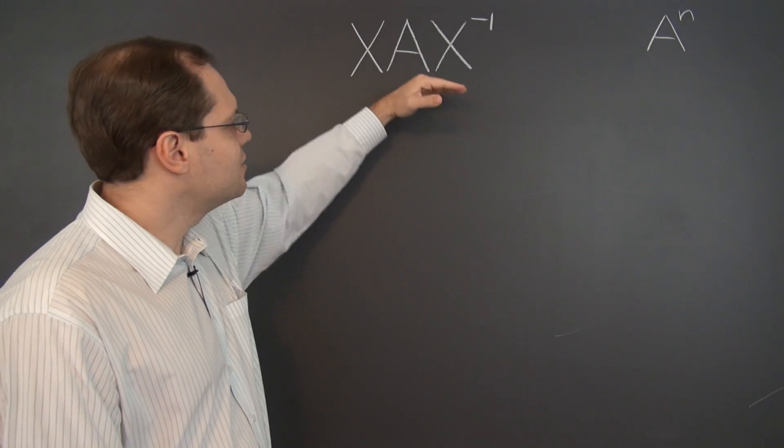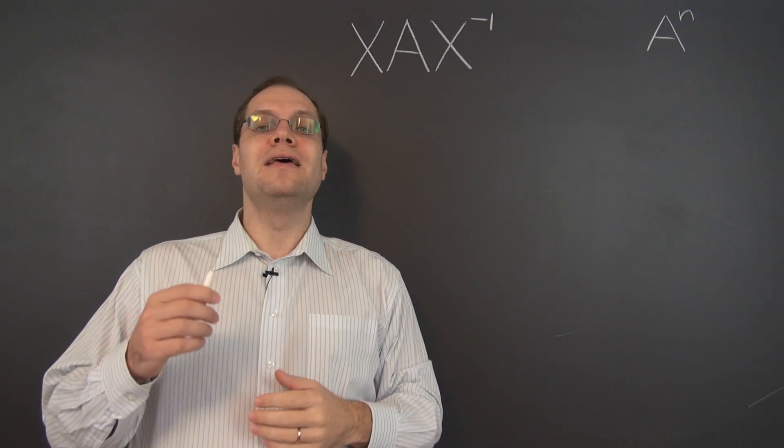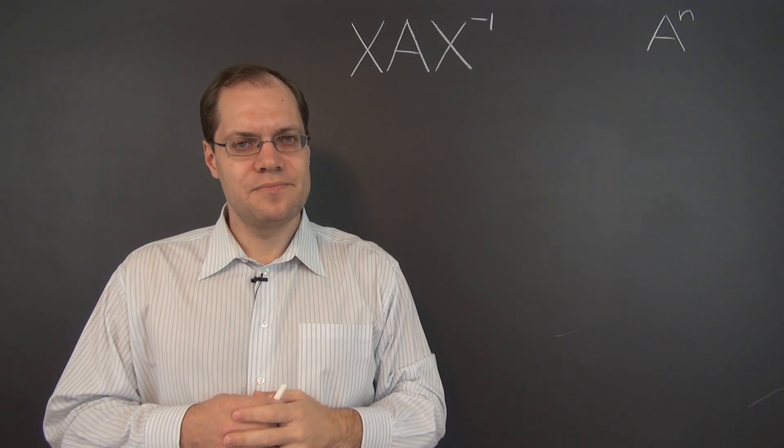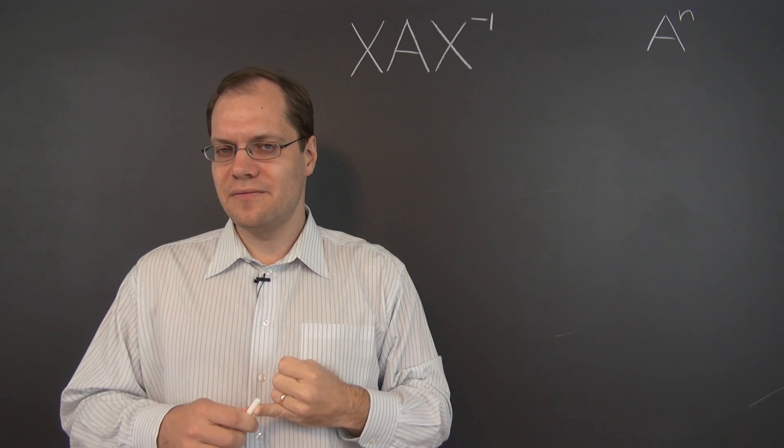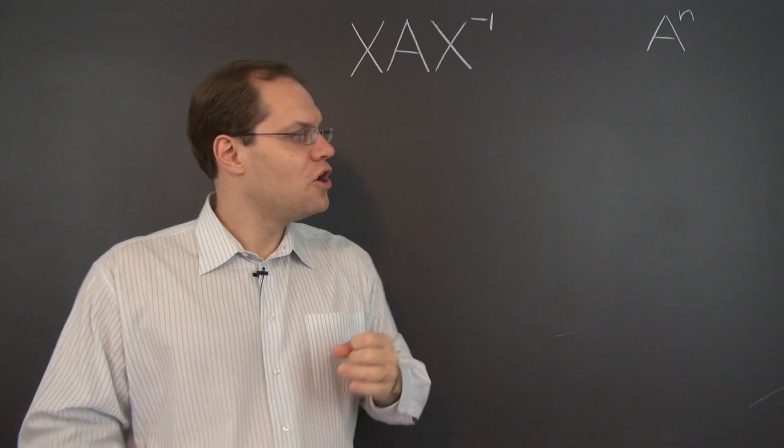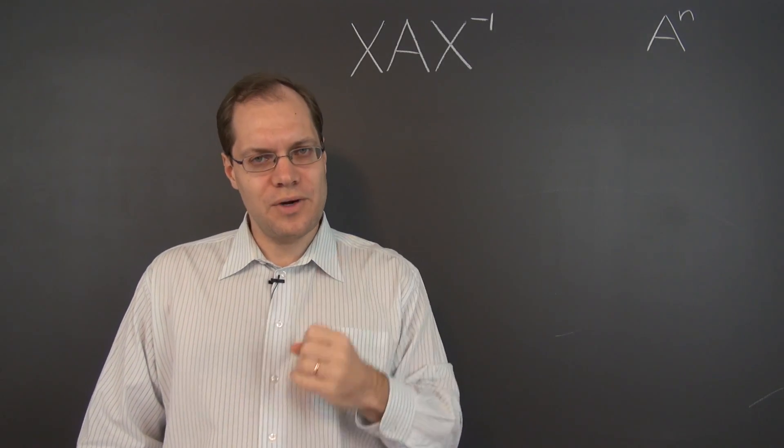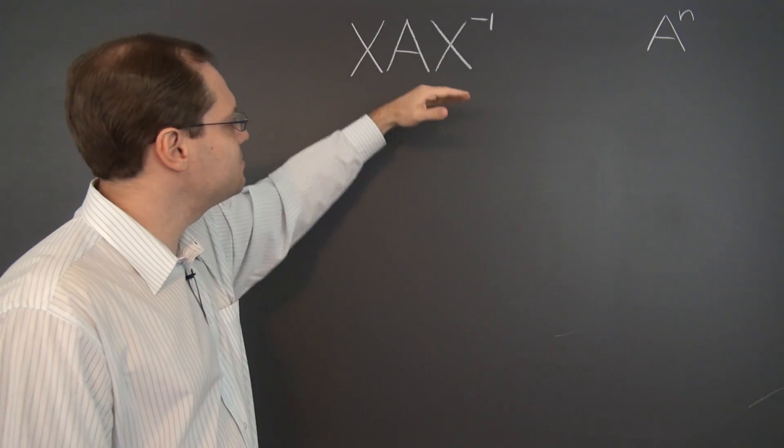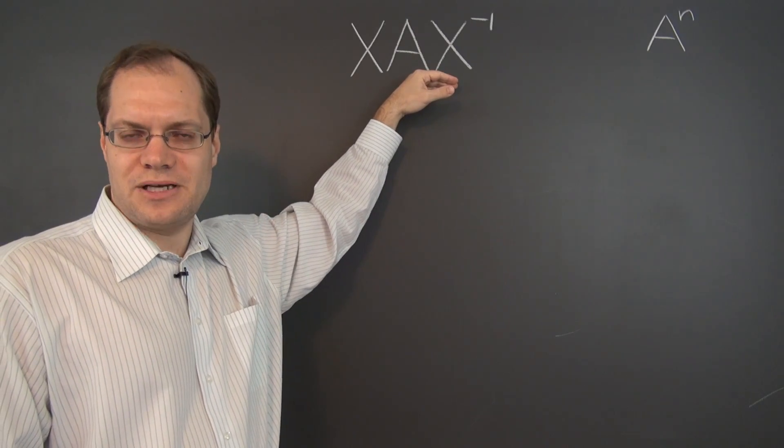So generally speaking, this matrix is different from A. However, it is similar in many ways. We'll discover that it has the same eigenvalues as the matrix A, and its eigenvectors are related to the eigenvectors of A in a very specific way. So because these matrices are so similar, this transformation is called the similarity transformation.